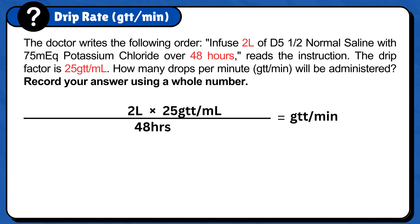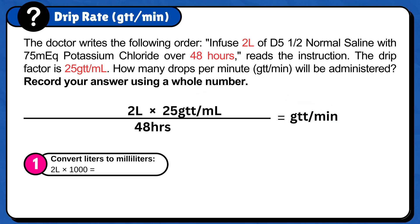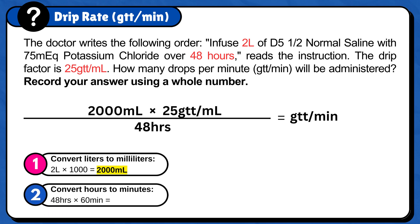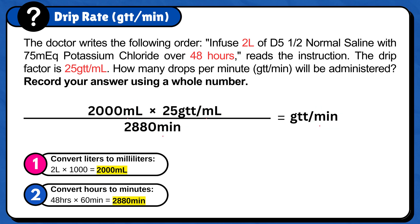First, convert liters to milliliters: 2 liters times 1,000 is 2,000 milliliters. Plug this answer into the formula. Now, convert hours to minutes: 48 hours times 60 minutes, because you have 60 minutes in each hour, is 2,880 minutes. Also plug this answer into the formula. Now that everything is in the right units, like milliliters and minutes, we can calculate it: 2,000 milliliters times 25 gtt per milliliter divided by 2,880 minutes.